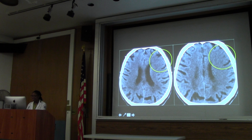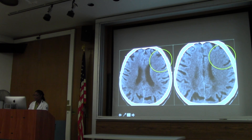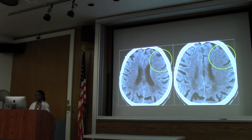Here you see it's very subtle, but drawing that line down and comparing side to side helps. If you look at the normal side, there's clear grey-white matter differentiation. When you go to the other side, you've lost it. This is a very easily missed but hyper-acute sign for stroke.